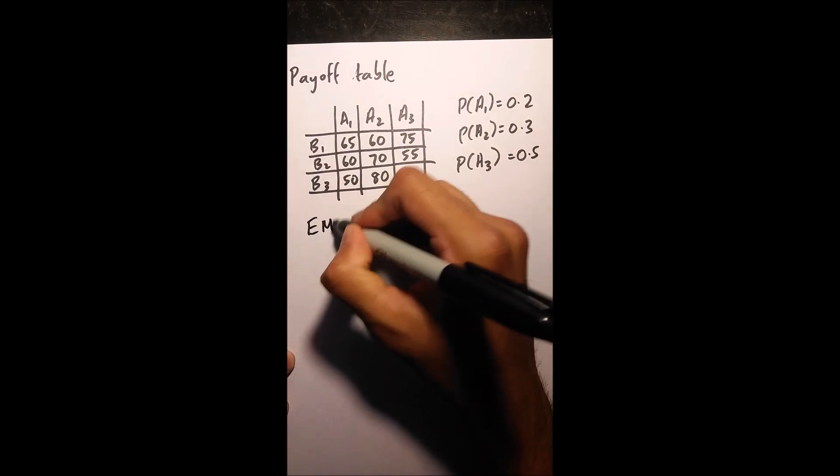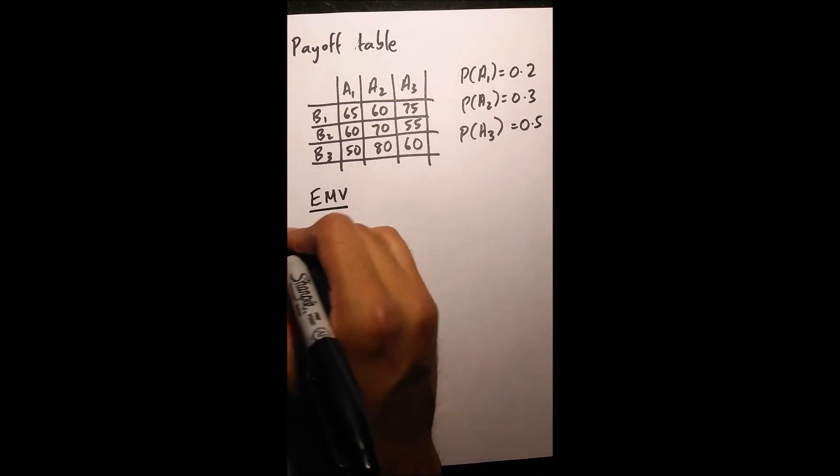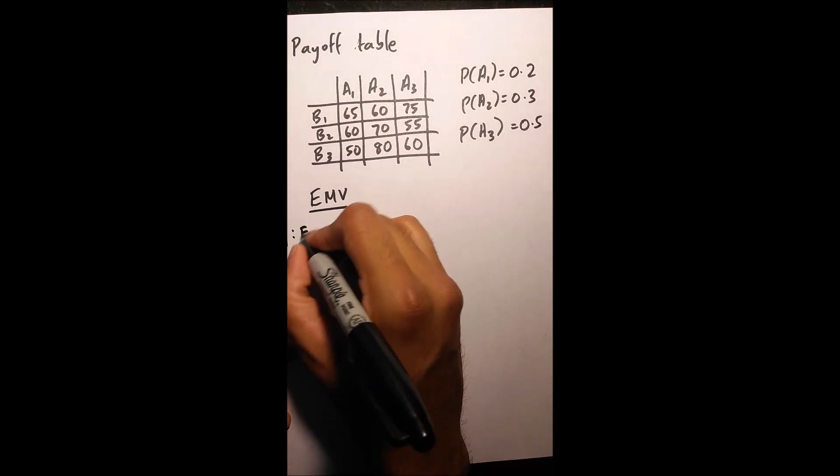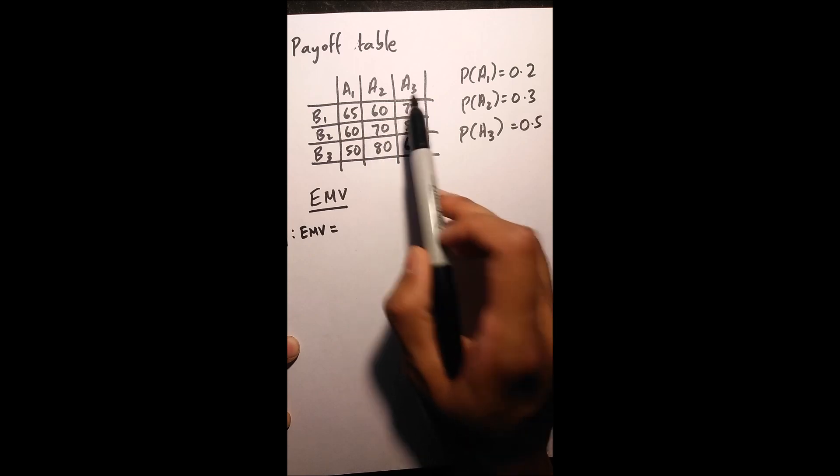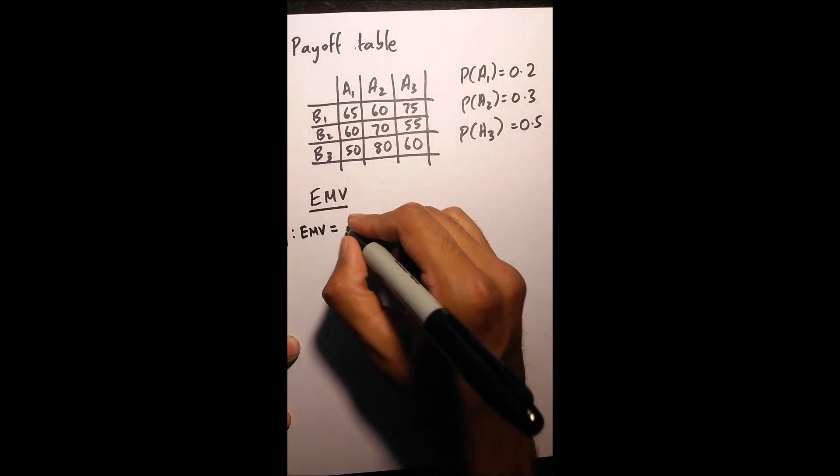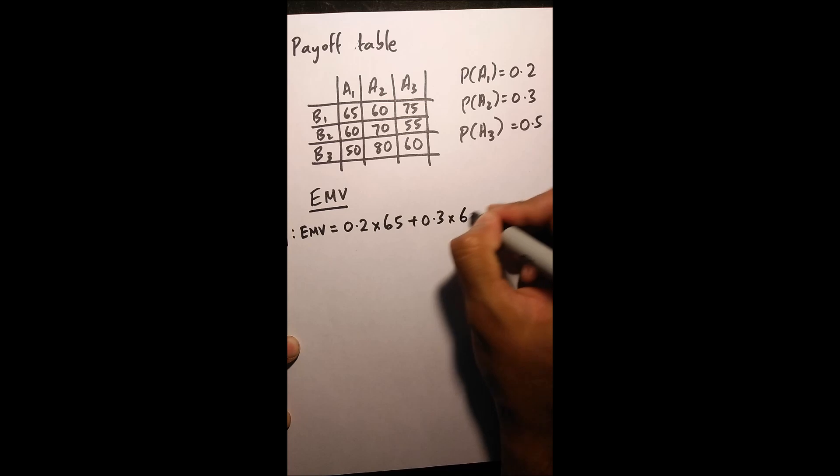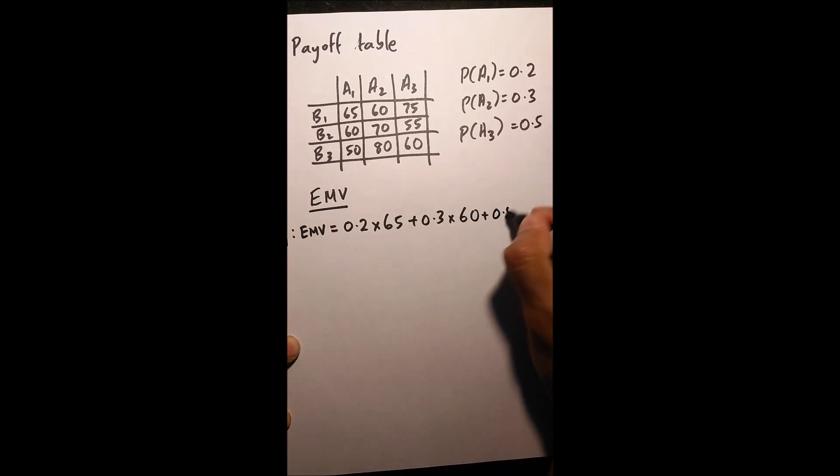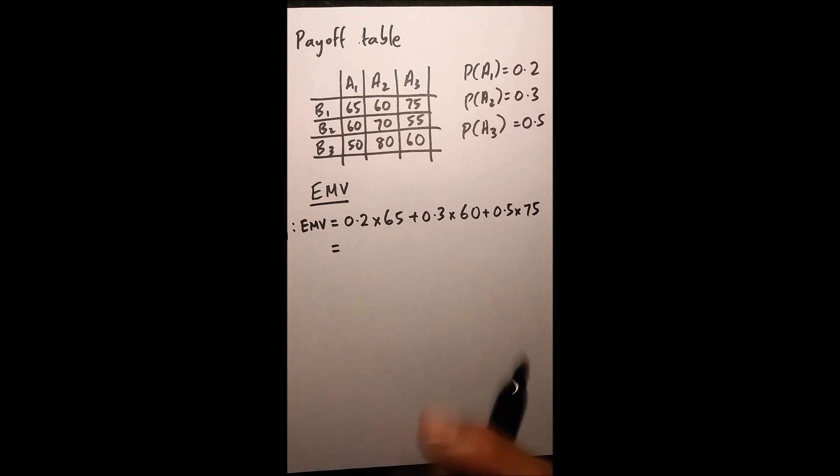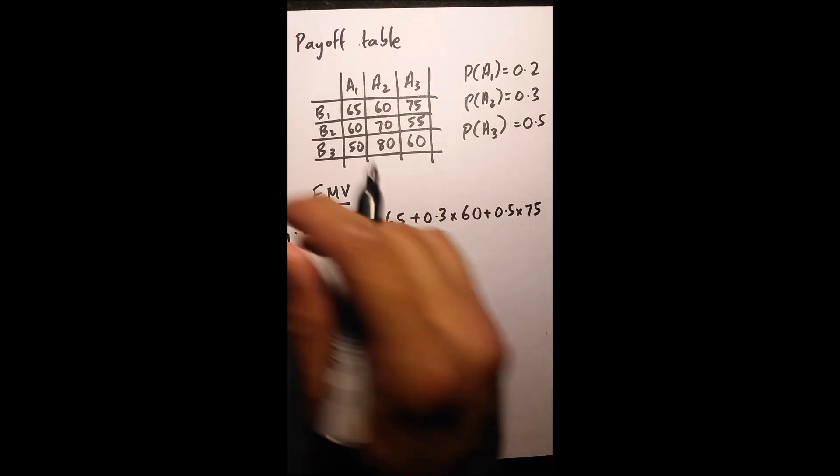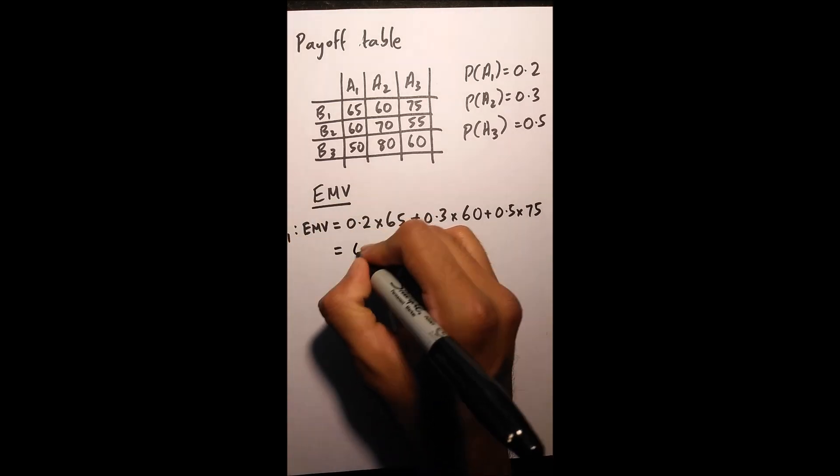Which is basically our expected monetary value. If you want to find our EMV, say for B1, we are basically going to take each of our probabilities and multiply them by each of the columns for B1. So I have 0.2 times 65 plus 0.3 times 60 plus 0.5 times 75, which gives me 68.5.